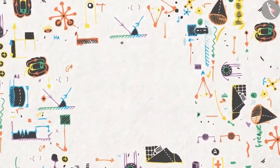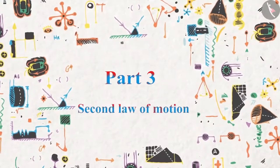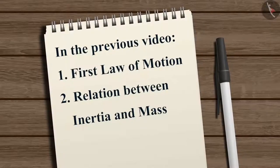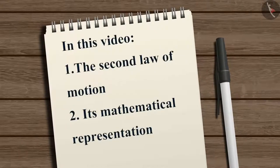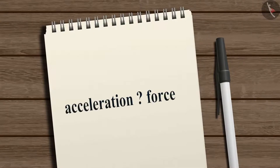Force and laws of motion, part three: second law of motion. In the previous video we learned about the first law of motion and saw the relation between inertia and mass. In this video we will learn about the second law of motion and how it is represented mathematically. Due to the application of an external unbalanced force on an object, its velocity changes, which means the object gains an acceleration. We will now learn how acceleration depends on the applied force.